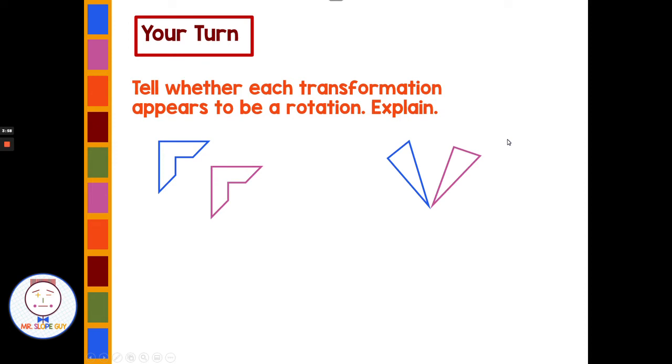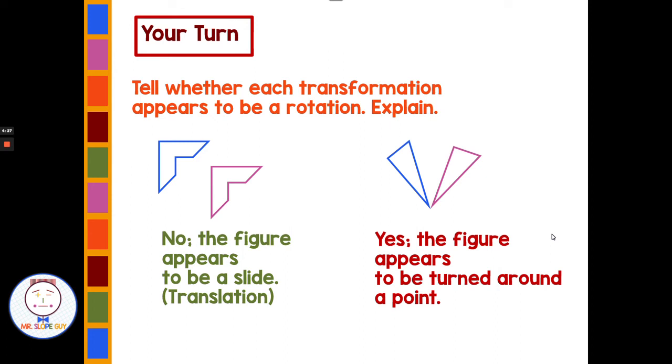Now for your turn, you want to tell whether each transformation appears to be a rotation and explain. I want you guys to draw both of these in your notes and then pause the video here and identify: do we have a translation, a rotation, or a reflection? Welcome back. This one from blue to pink or pink to blue is a translation - it's just a slide. And this one from pink to blue or from blue to pink is a rotation appearing to rotate around this point.